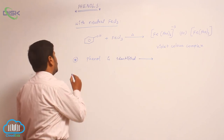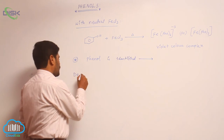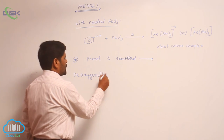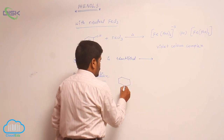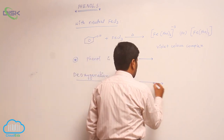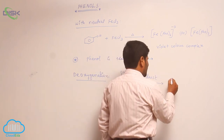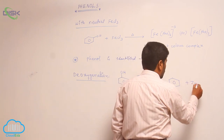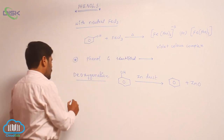Next is deoxygenation. Phenol reacts with zinc dust; deoxygenation takes place to form benzene, with loss of zinc oxide (ZnO).